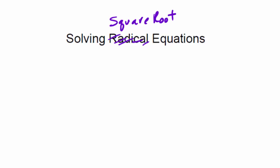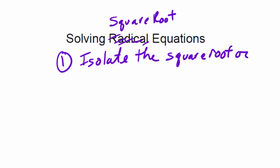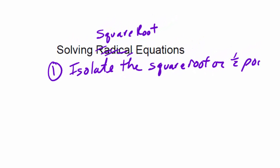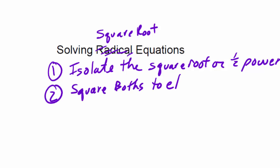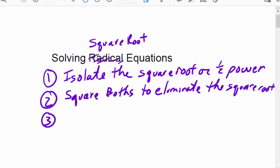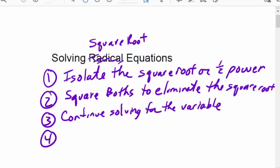A couple of the steps you need to know: step one is to isolate the square root, or one-half power, because one-half power is a square root. Step two, square both sides to eliminate the square root. Step three is to continue solving for the variable. And the last one, an important one, always check your answers.